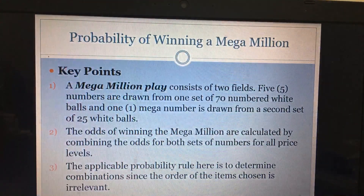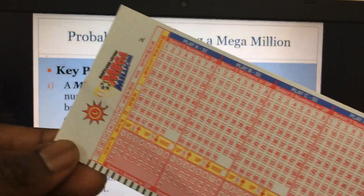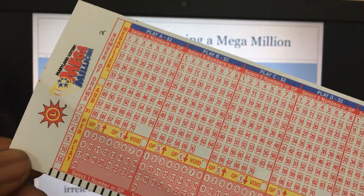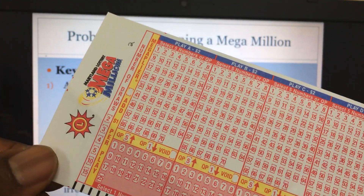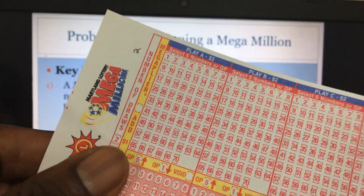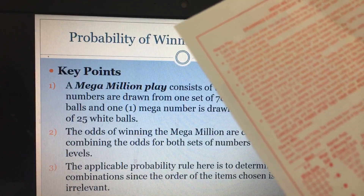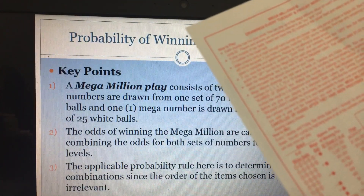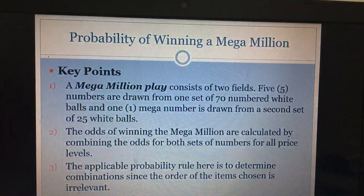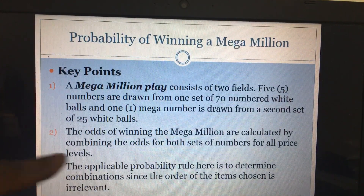Tonight I'm going to show you the probability of winning the Mega Millions. I brought the actual Mega Millions ticket so you can see how it looks. This is the kind of lottery that is very popular in America — they play it every Tuesday and Thursday. We're going to calculate the probability of winning the jackpot, which is usually a large amount, sometimes 100 or 200 million dollars.